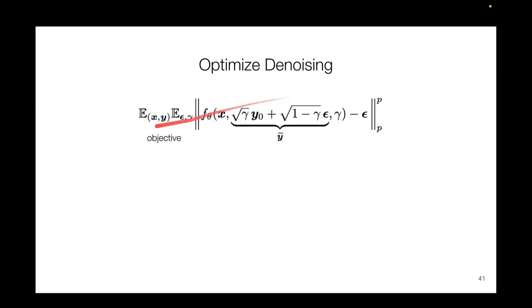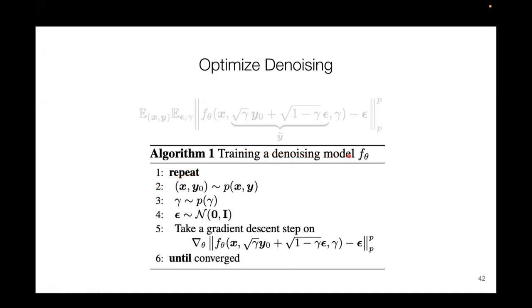This is our objective function for training: the expected loss over data and noise, where our denoising model takes X, the noisy target, and the variance, then subtracts epsilon, the noise, trying to minimize this expected loss. For Algorithm 1, training the denoising model: repeatedly sample data from the training dataset. The variance is a piecewise distribution — uniformly sample the time step and uniformly sample from the variance distribution. Epsilon is normally distributed noise. We then take a gradient descent step toward converging on this expected loss.